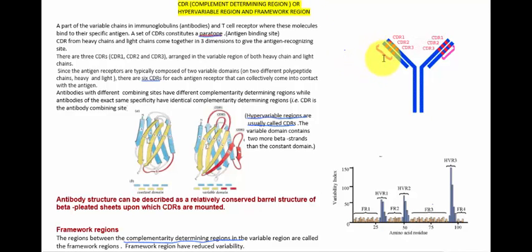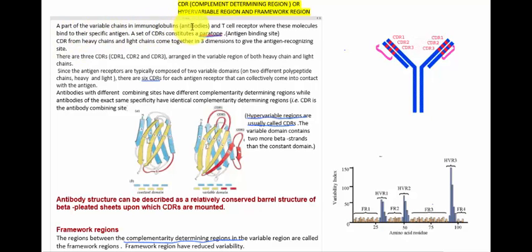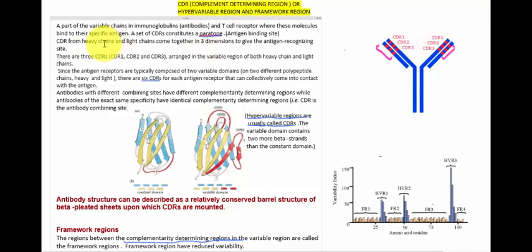We all know that this is the variable part of an antibody. This is the light chain and this is the heavy chain. A part of the variable chain in immunoproteins or antibodies and T cell receptor where these molecules bind to their specific antigen. The site of CDR constitutes the paratope. Paratope means it is the site of the antibody wherein an antigen can bind. So CDRs from heavy chains and light chains come together in three dimensions to form the antigen recognizing site.